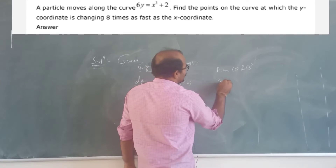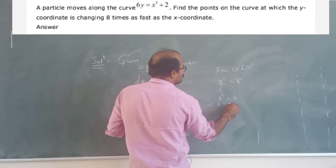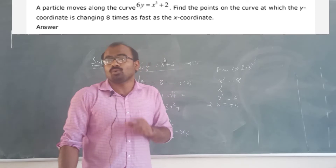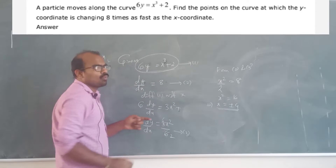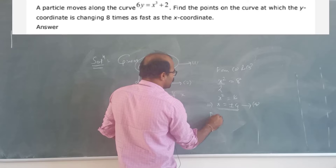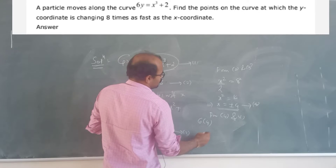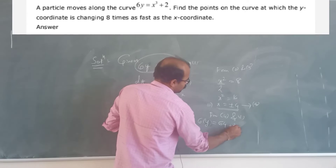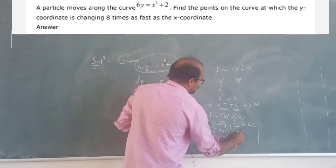So x²/2 = 8, meaning x² = 16, which implies x = ±4. Substituting x = 4 into 6y = x³: 6y = 64 + 2 = 66... that implies y = 11. So first point is (4, 11).